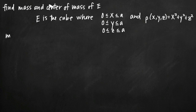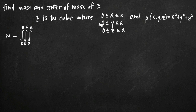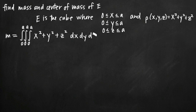We'll find center of mass after finding mass, because we need mass to find center of mass. Mass is equal to the triple integral, and since each variable goes from 0 to a, we say 0 to a for each integral. We take our density function x squared plus y squared plus z squared inside the integral. Since we have a cube with the same limits of integration for each variable, the order of integration doesn't matter, so we'll do dx, dy, dz. We integrate first with respect to x.